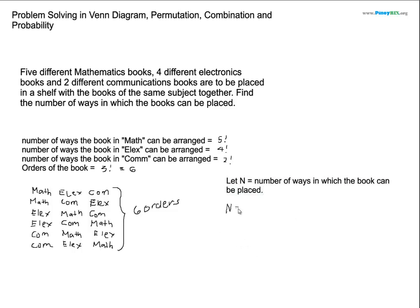So equivalent to using the principles of counting. So five factorial for the math, multiplied to four factorial times two factorial. Then multiplied dun sa orders. Kasi pwede kasing magpalit-palit yan. Diba? So sabi niya nito, pwede magpalit-palit yung mga books. So times the number of sequence ng order, so times six or three factorial.